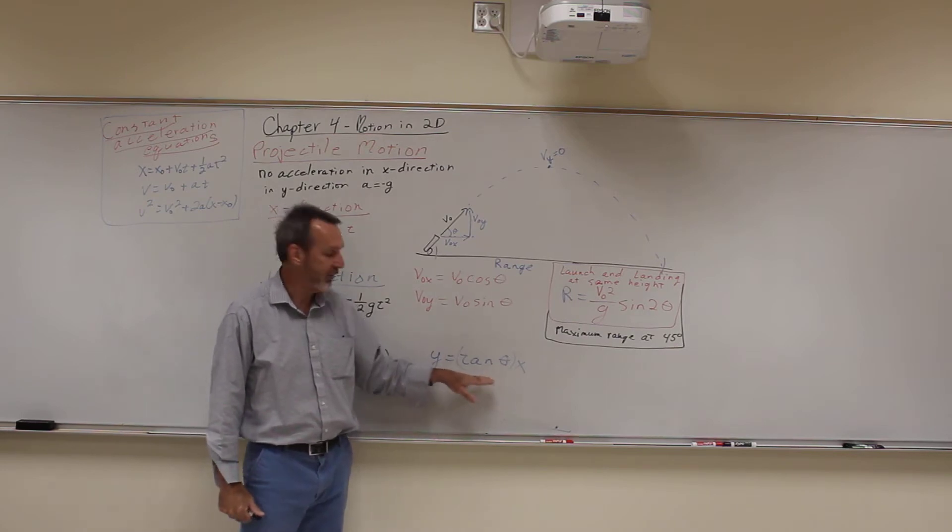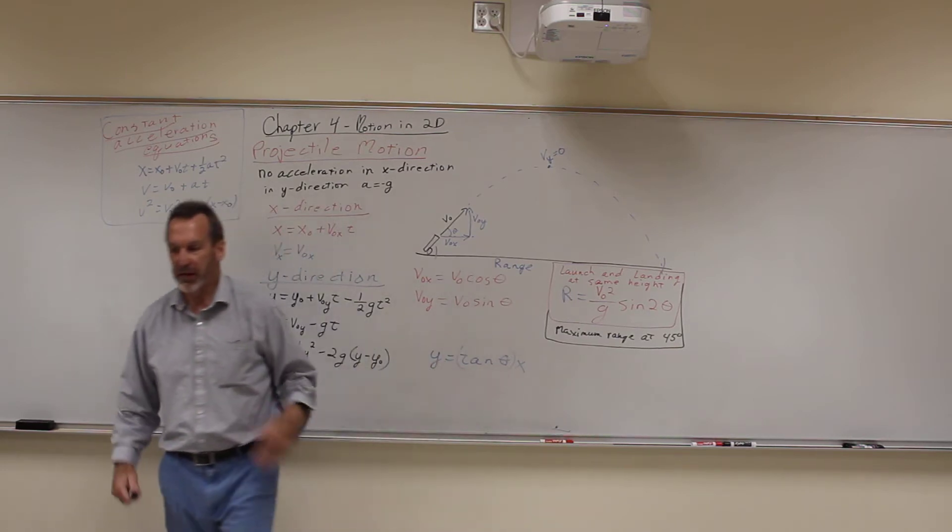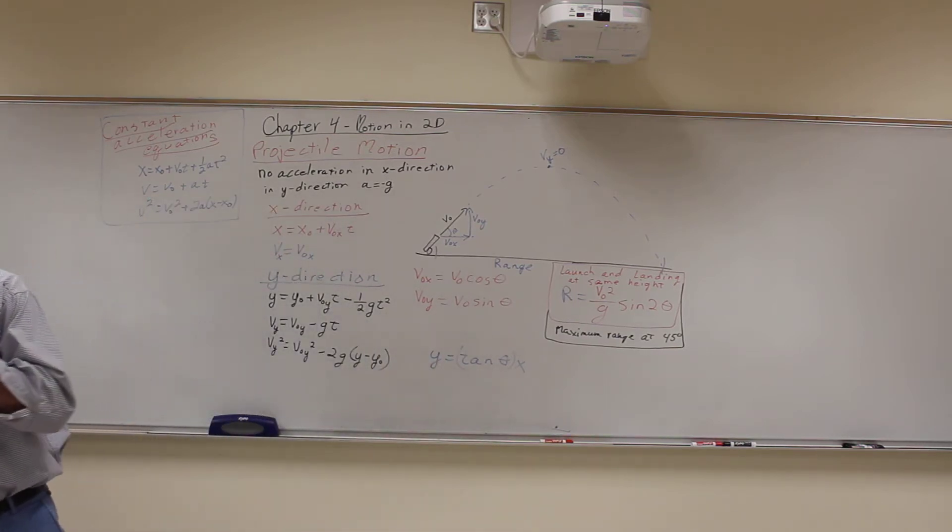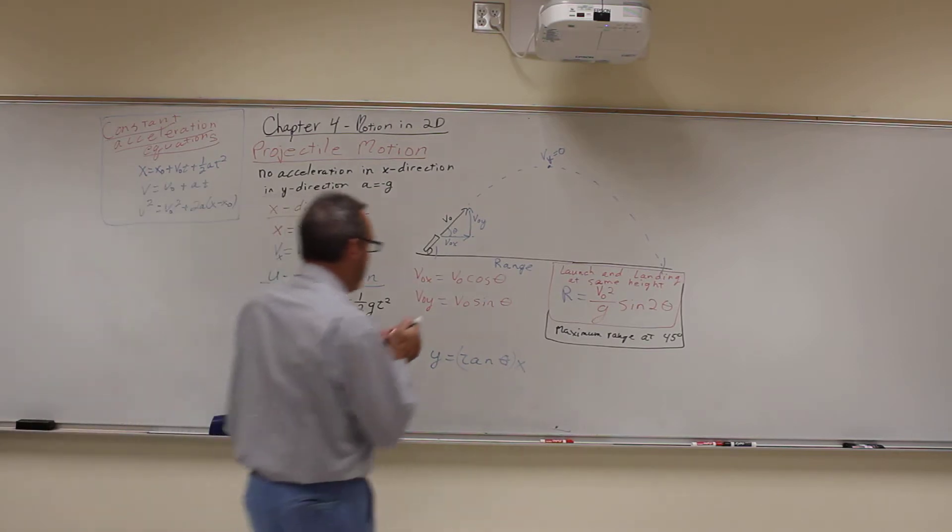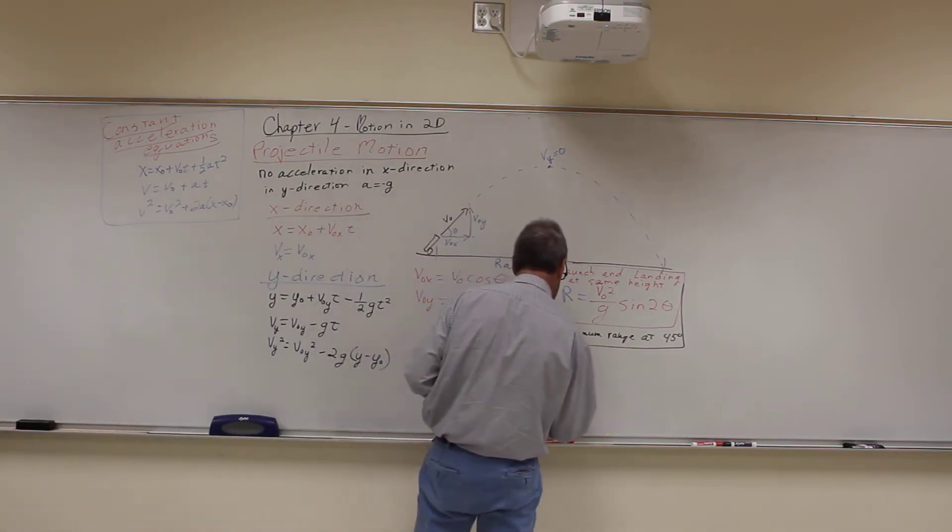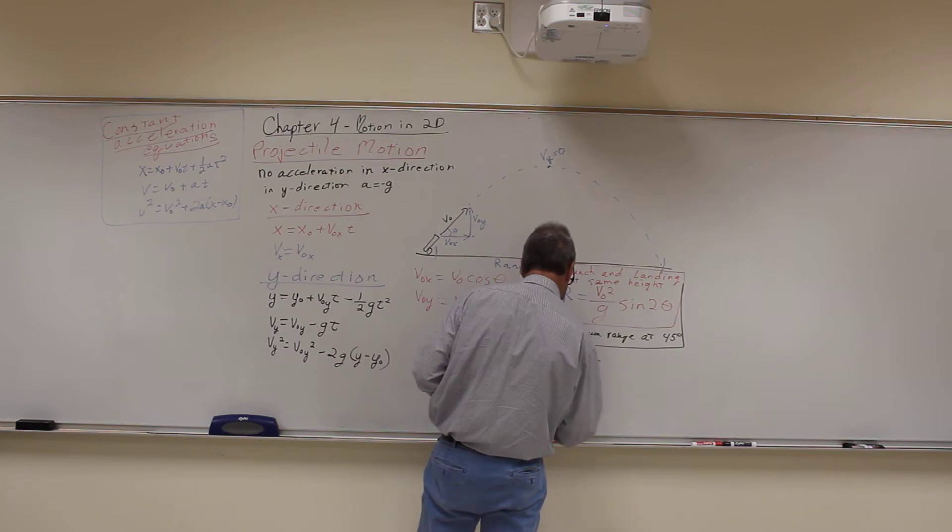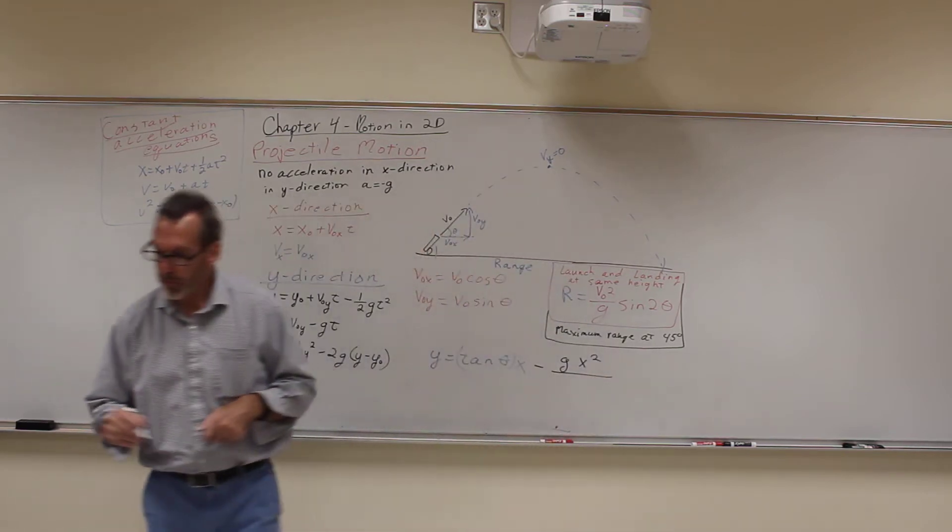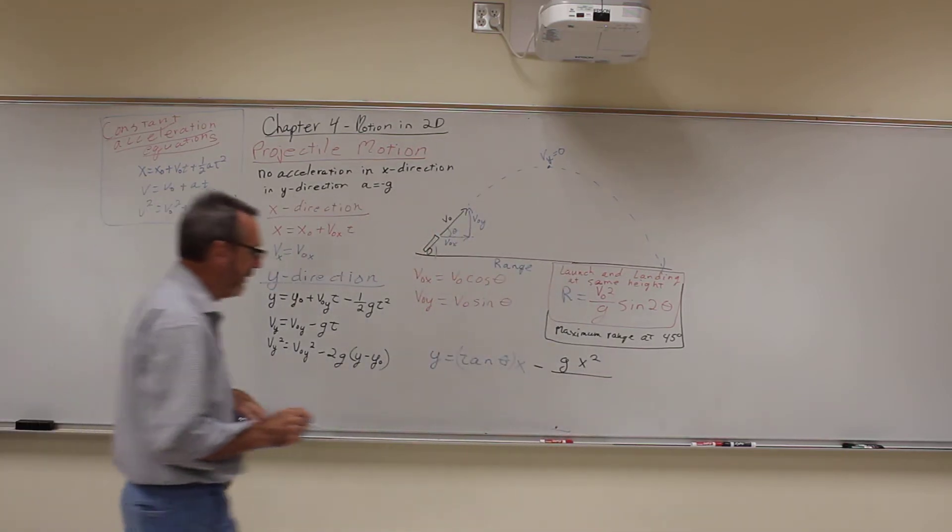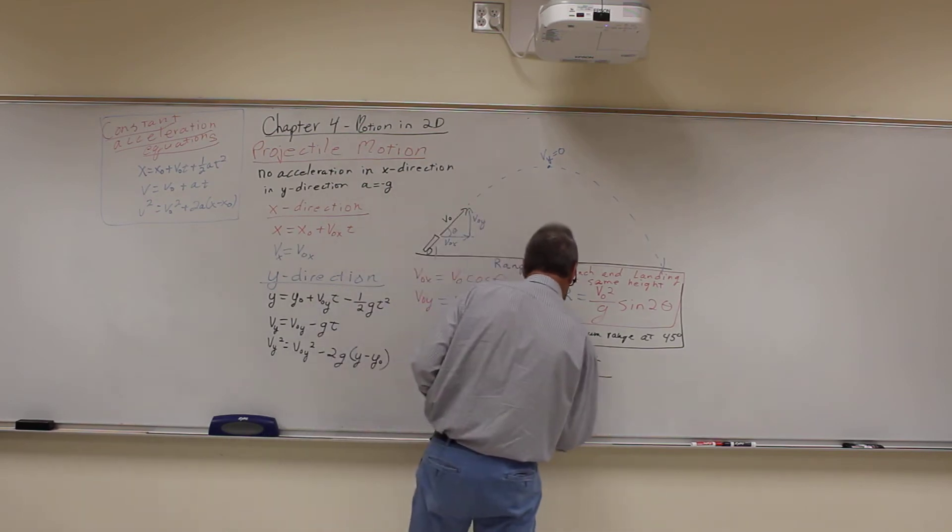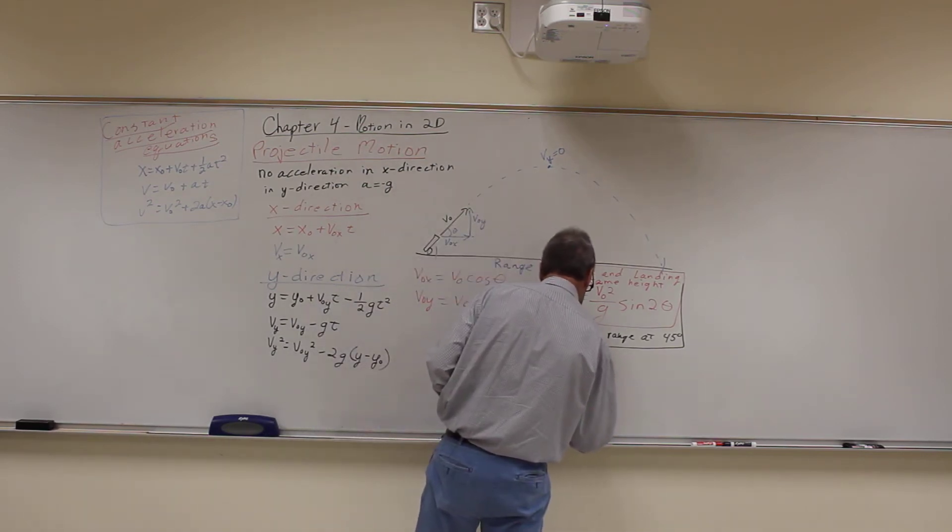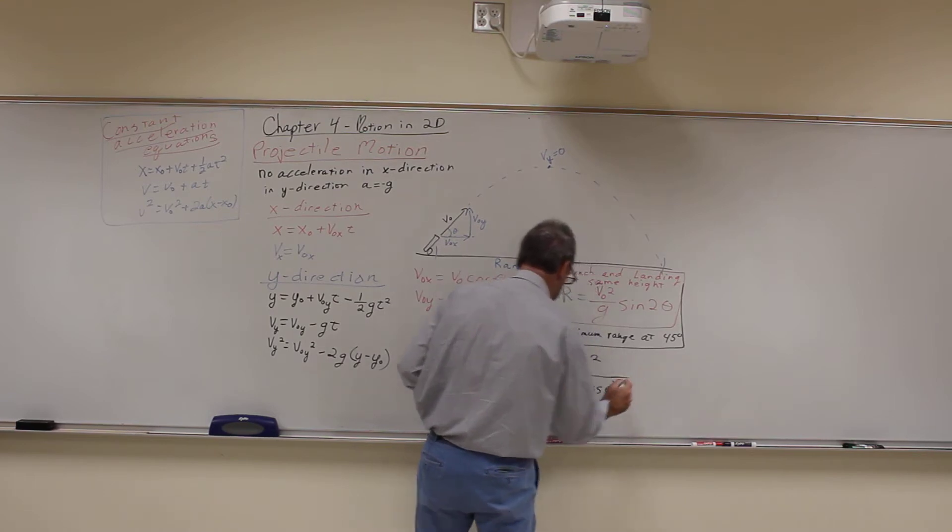I was working on the equation Y versus X. Y is equal to tangent of theta times X minus—sorry—minus GX squared over 2 times the quantity V-naught cosine theta, that whole quantity squared.